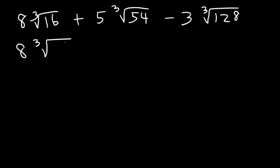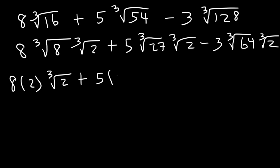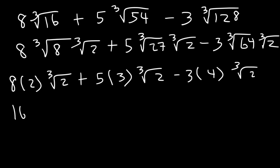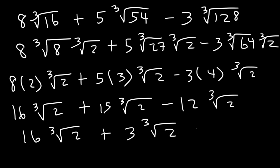8 goes into 16, so break 16 into 8 and 2. 27 goes into 54 — 54 divided by 27 is 2. And 64 goes into 128 — 64 times 2 is 128. Notice every term has a cube root of 2, so these are all like terms. The cube root of 8 is 2, the cube root of 27 is 3, and the cube root of 64 is 4. So: 8 times 2 is 16, 5 times 3 is 15, and 3 times 4 is 12. Then 15 minus 12 is 3, and 16 plus 3 is 19. The answer is 19 cube root 2.